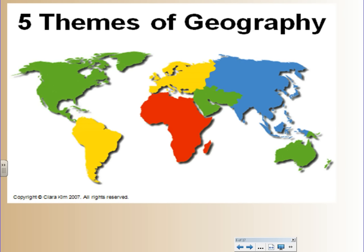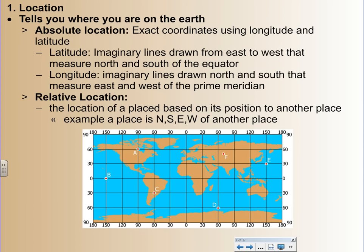Within geography, there are what we call five different themes — five ways of looking at geography. The first is location, which tells you where you are. Absolute location is the coordinates — the stuff you put in the GPS. You put Syracuse, New York in the GPS, it's going to give you coordinates in latitude, which are the lines that run east to west and measure north and south on the map. Longitude are the other lines — the up and downs — and they're drawn north and south, telling you how far east to west you are of the prime meridian, which is zero degrees longitude, going through England and parts of Europe and West Africa.